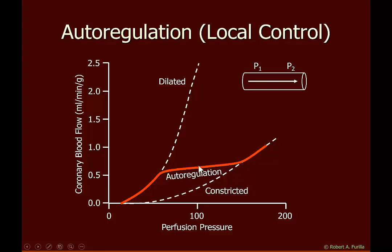This region is called the autoregulation zone. The reason this occurs is that smooth muscles begin to constrict as they are being stretched by the increase in perfusion pressure. The transmural pressure — from inside to outside the vessel — stretches the vessel, and that stress induces smooth muscle contraction, causing vessel constriction and leading to this plateau phase that controls coronary blood flow. This autoregulation also occurs in vessels outside of the heart.